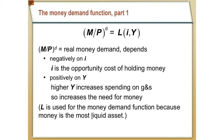The way these variables are related: I is inversely related, so I goes up, the left-hand side goes down. Income Y is positively related — if income is higher, we're going to buy more stuff, so we need more money. So Y goes up, demand goes up. There is a negative relationship between I and money demand and a positive relationship between Y and money demand.